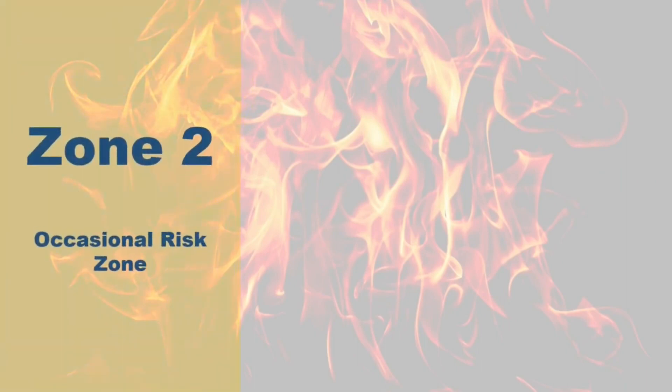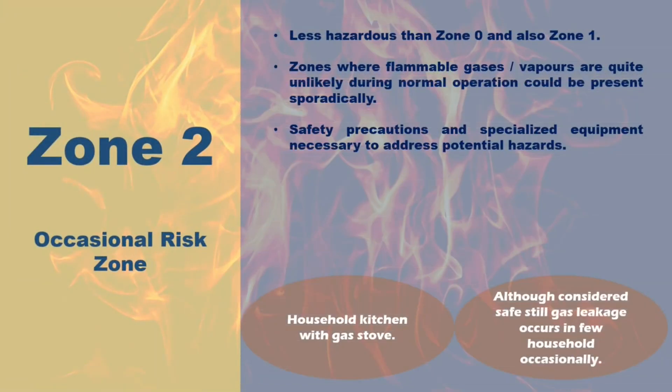Zone 2 - Safe Most of the Time. Zone 2 represents a lower level of risk compared to Zones 0 and 1. This zone includes environments where the presence of flammable gases or vapors is unlikely during regular operations, but there's a slight chance of it occurring sporadically. A typical example would be household kitchens with gas stoves, where the risk of gas leakage is minimal. However, safety precautions and specialized equipment are still necessary to address potential hazards.